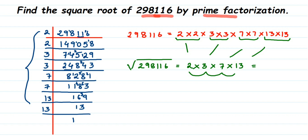So the square root of 298116 is 546. I hope this question is clear. If you have any questions or doubts, you can drop a comment. Thank you so much for watching.